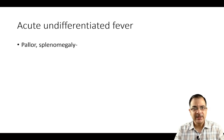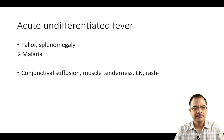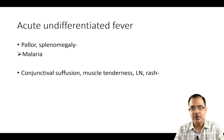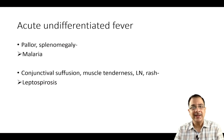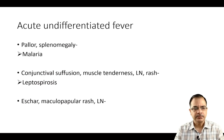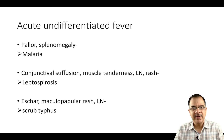Pallor and splenomegaly together are suggestive of malaria. Conjunctival congestion, muscle tenderness, lymphadenopathy, or rash — along with an eschar — and maculopapular rash or lymphadenopathy suggest leptospirosis and scrub typhus respectively.